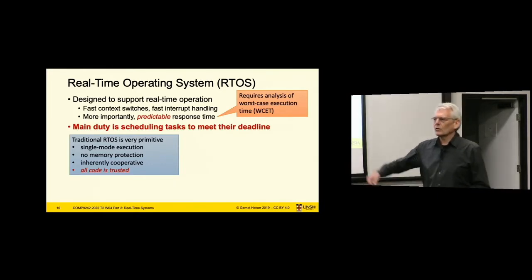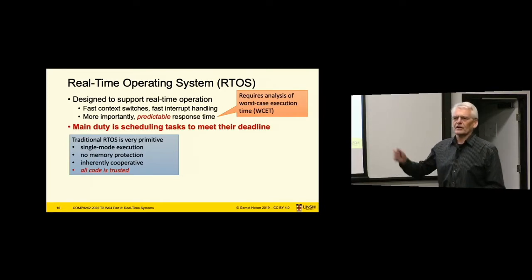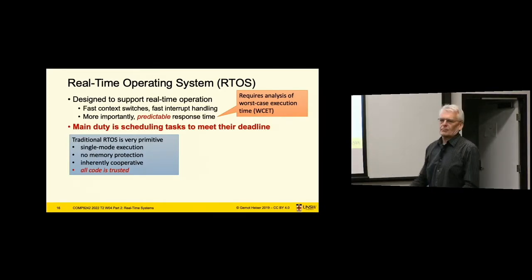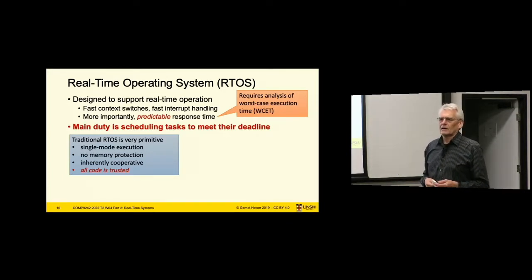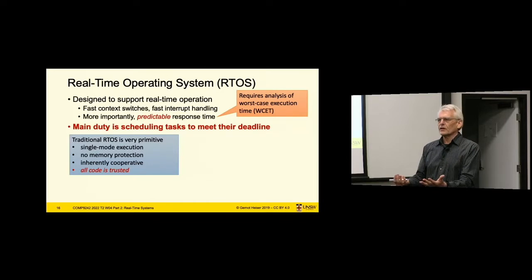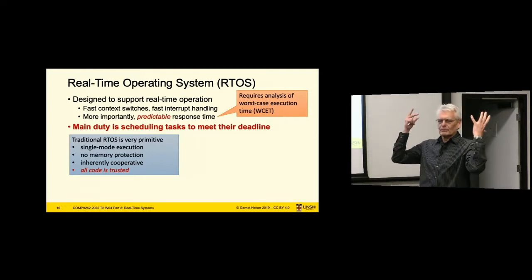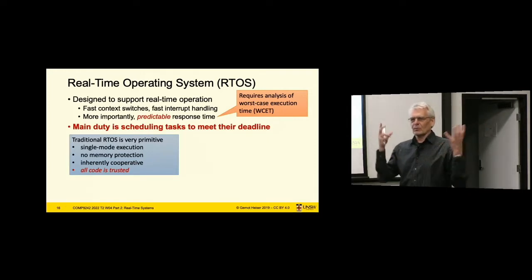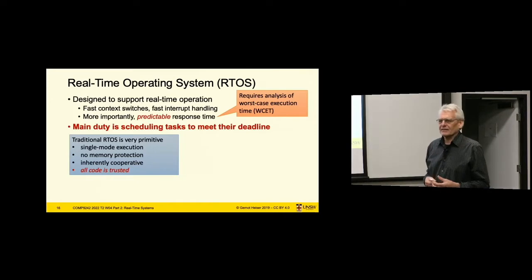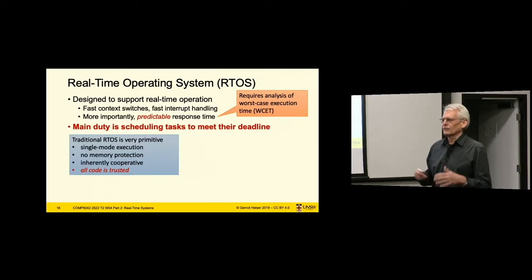The basic job is: receive an interrupt, decide who it is destined for, and deliver it real quick; then schedule the task appropriately to deal with it. In this traditional model with no memory protection, basically all code is trusted. In particular, you trust the code to adhere to its worst-case execution time — or put differently, you trust that you have done a sound worst-case execution time analysis and that things don't mess with each other and are all well-behaved. Which is fine as long as the system is really simple — for example, a simple microcontroller controlling a thermostat that takes input from a temperature sensor and turns the heating on or off.